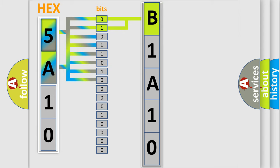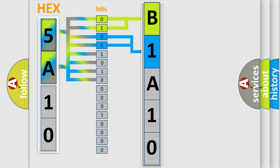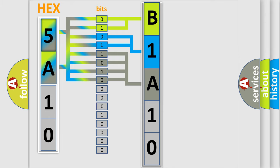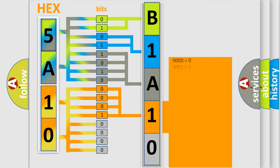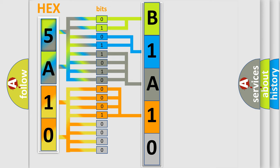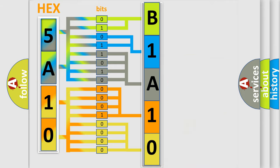The next two bits determine the second character. The last four bits of the first byte define the third character of the code. The second byte is composed of a combination of eight bits. The first four bits determine the fourth character of the code, and the combination of the last four bits defines the fifth character. A single byte conceals 256 possible combinations.